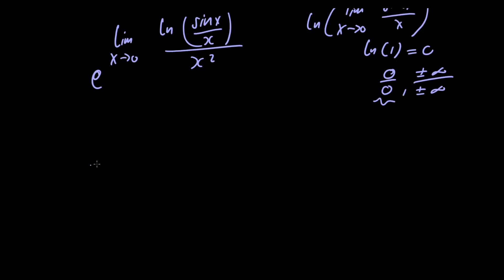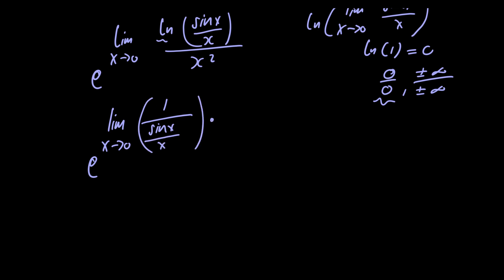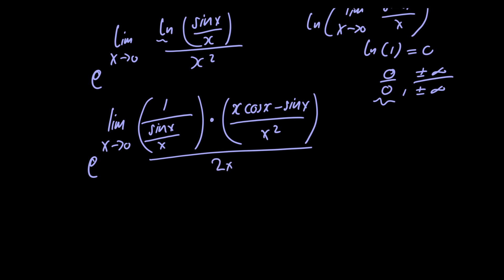So let's go ahead and do that. We're going to have e raised to the limit as x approaches 0. Now in order to take the derivative of the natural logarithm of sin of x divided by x, we need to use the chain rule. We'll take the derivative of the outside part and then we'll take the derivative of the inside part. The derivative of the natural logarithm is just 1 over its argument, so we'll have 1 over sin of x divided by x. We'll be multiplying this by the derivative of the inside part, which we can find using the quotient rule.